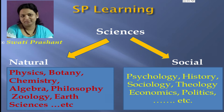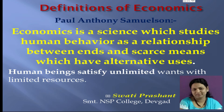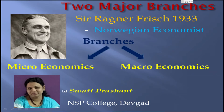Economics is known as the queen of social sciences. Paul Anthony Samuelson says that economics deals with the economic aspects of human behavior. Human beings satisfy unlimited wants with limited resources. Sir Ragnar Frisch, the Norwegian economist, divided economics into two major branches: microeconomics and macroeconomics. In this lecture, we will discuss microeconomics.